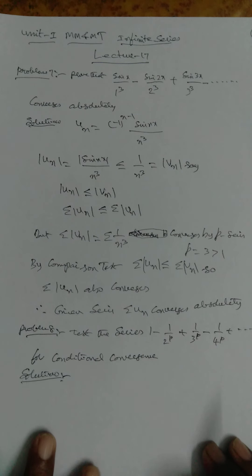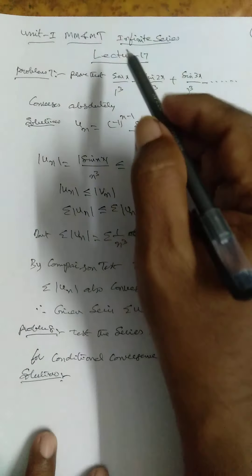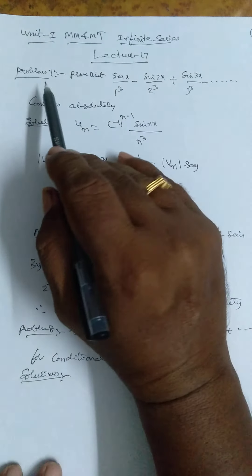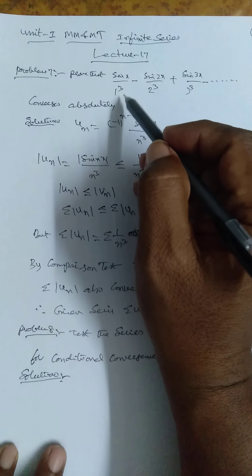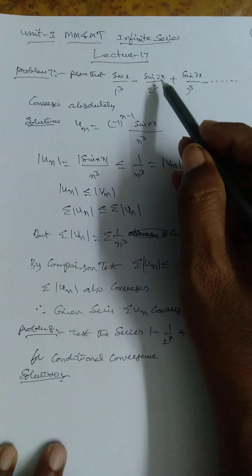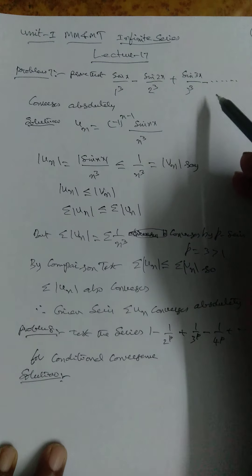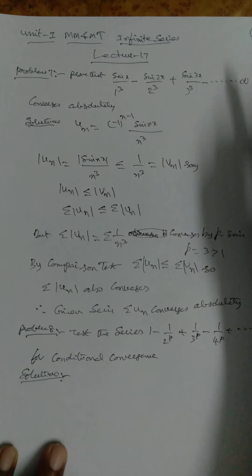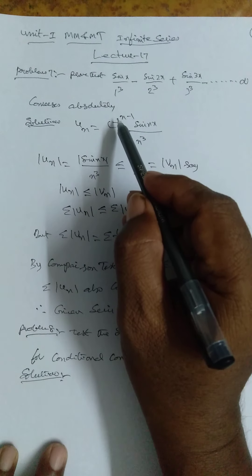Good morning my dear students. This is the Infinite Series, Lecture 17, Problem 7. Prove that sin(x)/1³ minus sin(2x)/2³ plus sin(3x)/3³ minus so on to infinity converges absolutely.